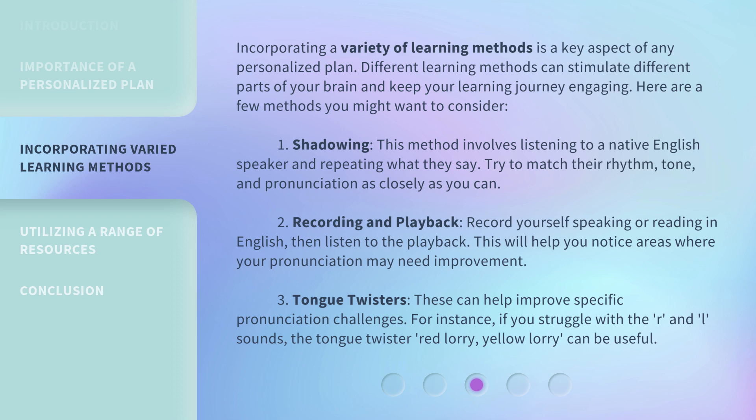1. Shadowing. This method involves listening to a native English speaker and repeating what they say. Try to match their rhythm, tone, and pronunciation as closely as you can.